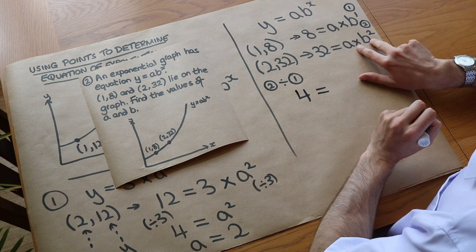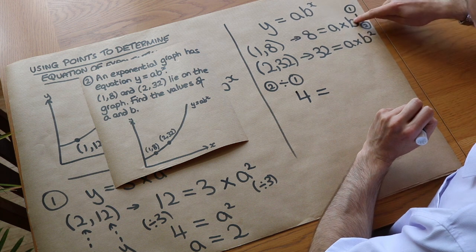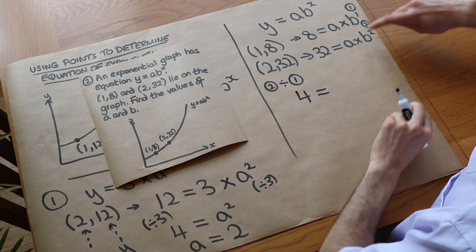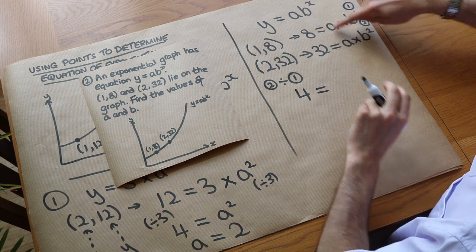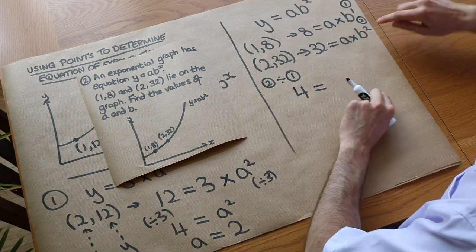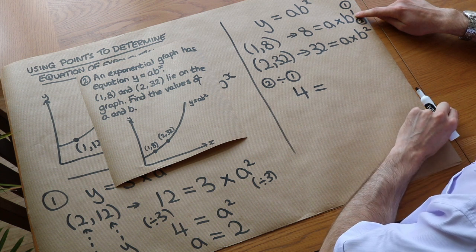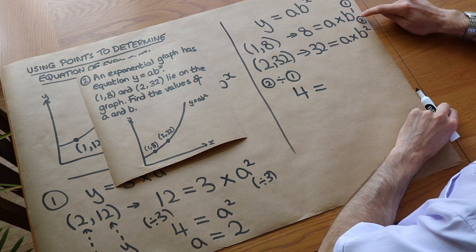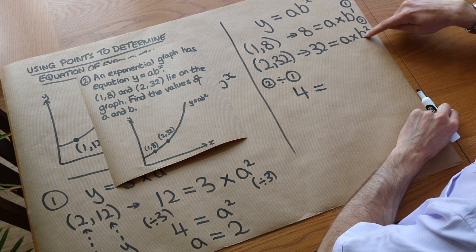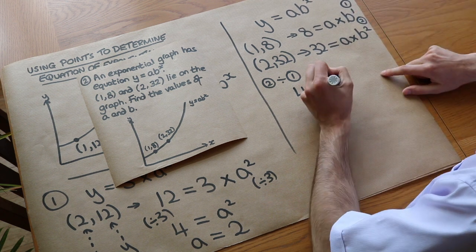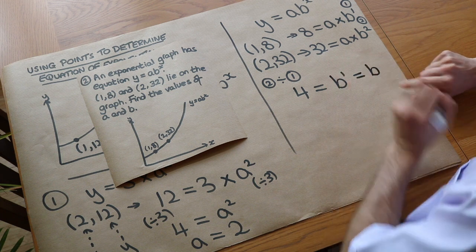Dividing the left-hand sides: 32 divided by 8 is 4. On the right-hand side, dividing ab squared by ab to the 1 — the a's cancel. For the b terms, we subtract the powers: b squared divided by b to the 1 gives b to the 2 minus 1, which is b to the 1, or just b. So 4 equals b.